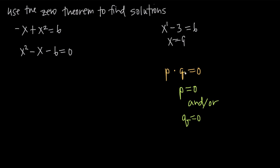If q equals zero, we'd get zero p equals zero, or just zero equals zero, and that would also be true. Or if both of them were equal to zero, then we'd have zero times zero equals zero, which is also true. But there's no way this equation can be true if neither p nor q equals zero — at least one of them must be zero, or both will be zero. This is the zero theorem.